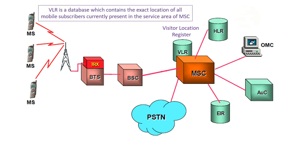The first one is VLR — Visitor Location Register. VLR is a database which contains the exact location of all mobile subscribers currently present in the service area of MSC. If you are going from one state to another state, then your entry is marked in the database of VLR.